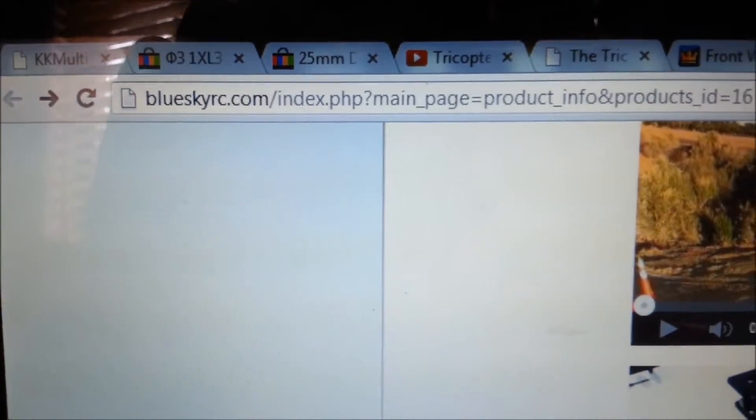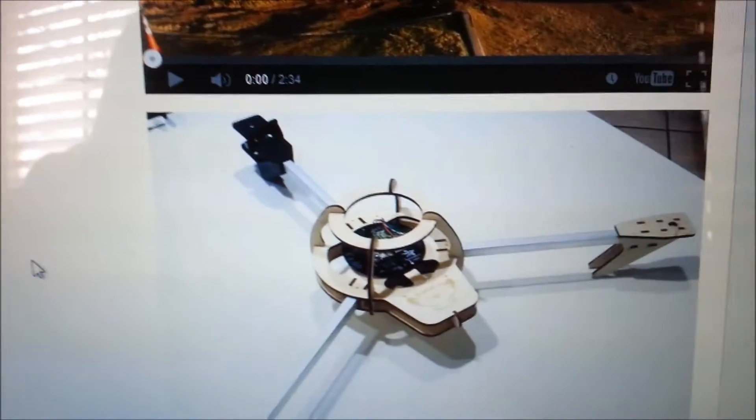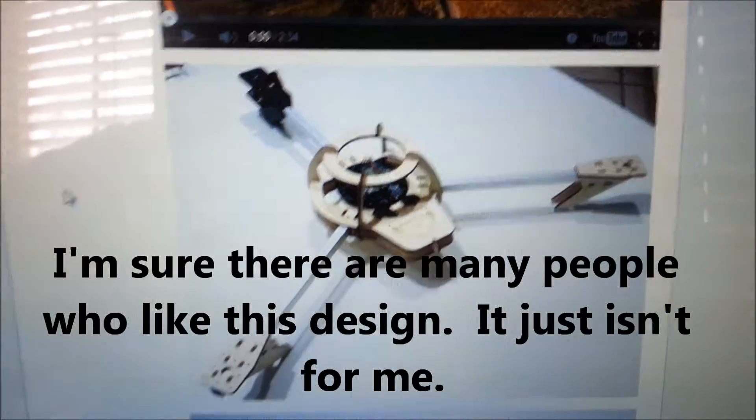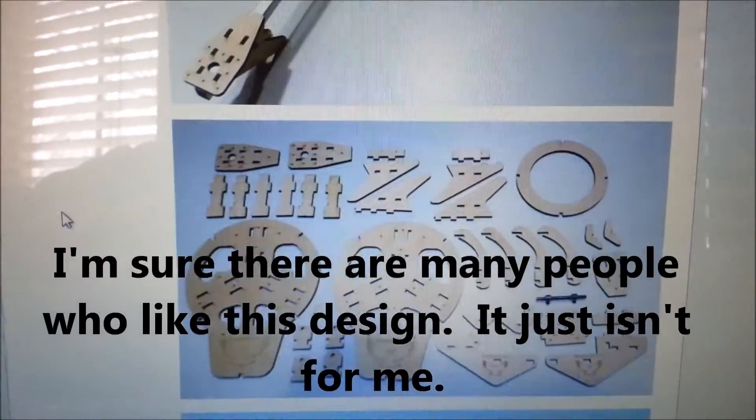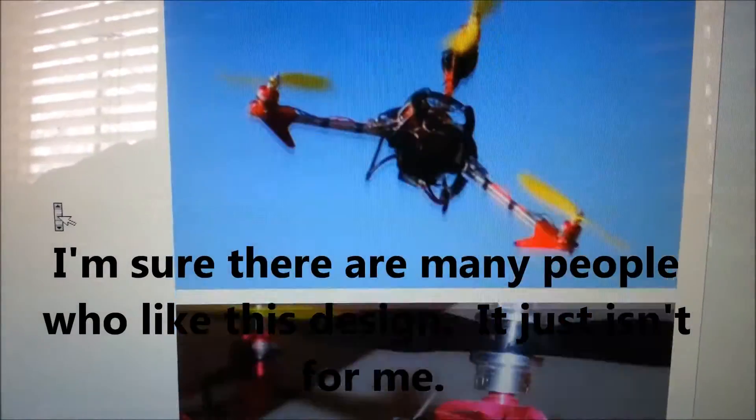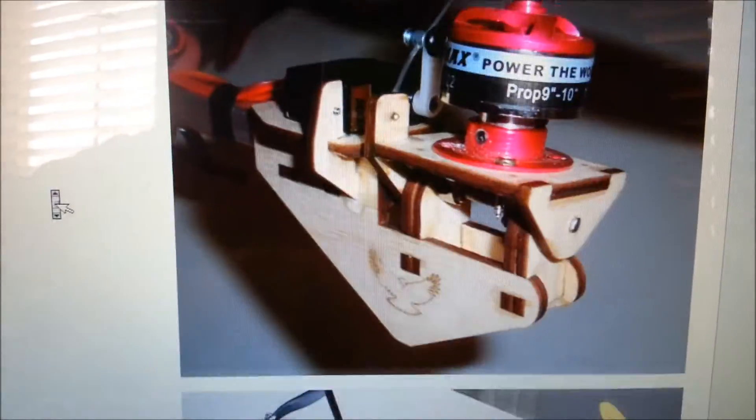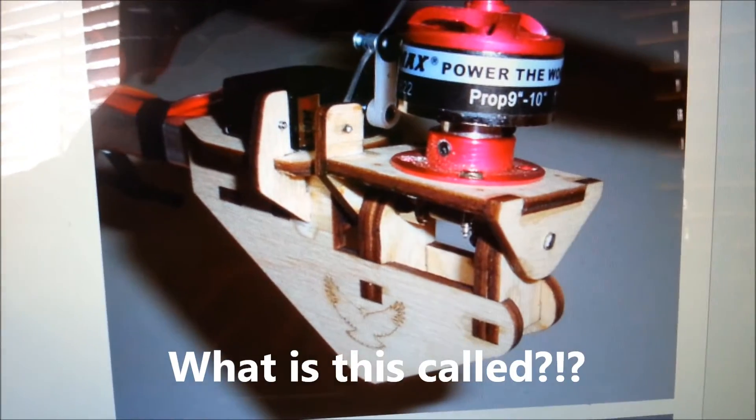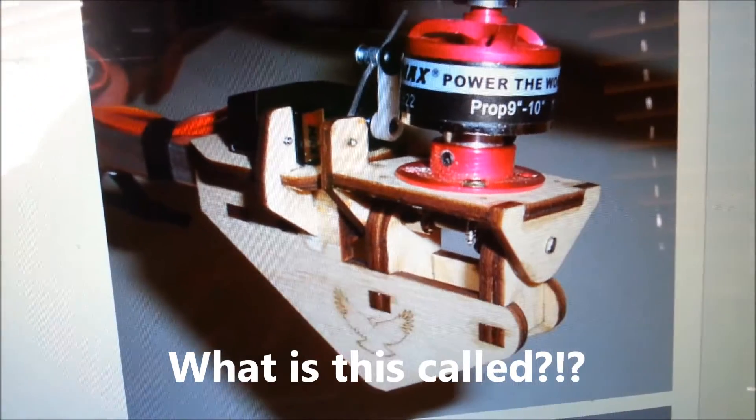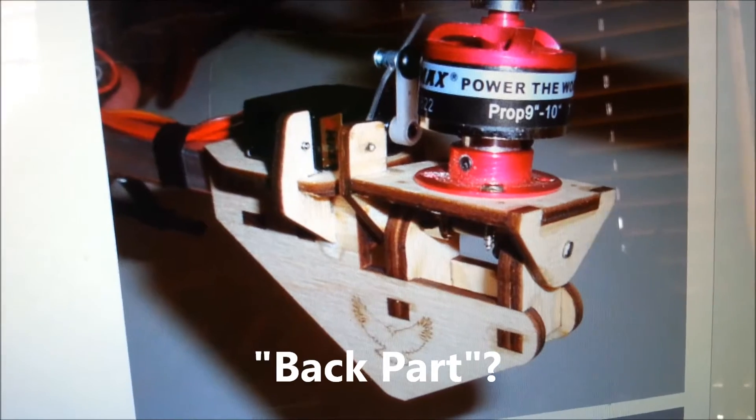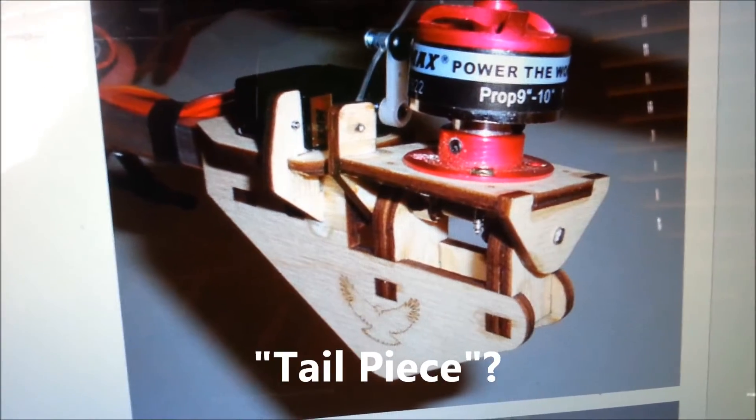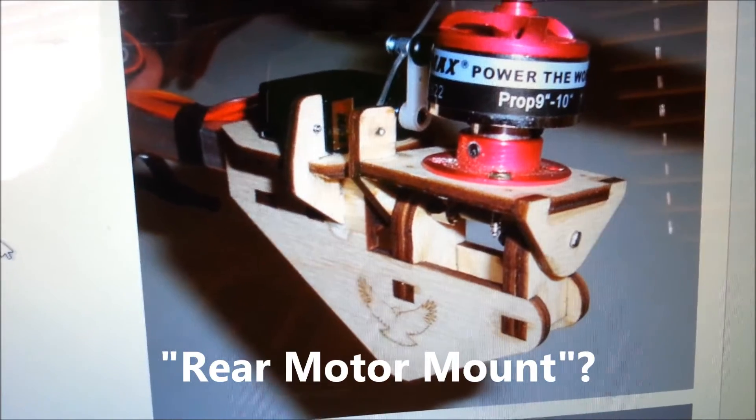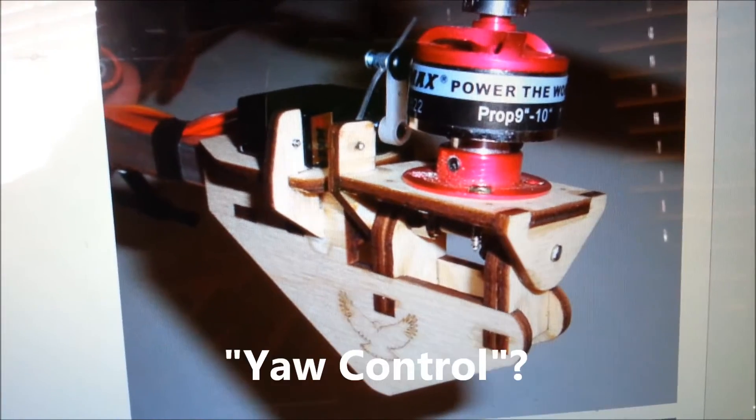Out here on blueskyrc.com he has a good picture of his tricopter. Now to each his own but what I was really interested in is down here a little bit where he has this awesome looking back part for where he mounted his servo and how he built his little hinge so that it can turn the rear propeller back and forth.